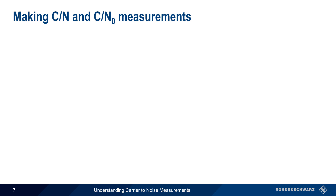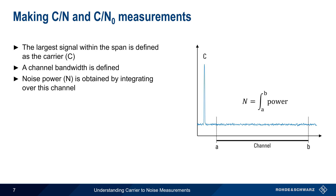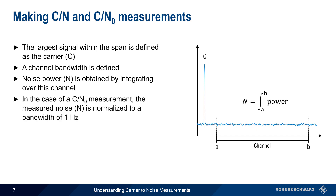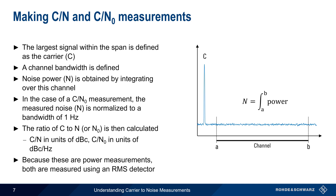When making a carrier-to-noise measurement, the largest signal within the spectrum analyzer span is defined as the carrier with power C. A channel bandwidth must also be defined, and the noise power N is then obtained by essentially integrating between the channel limits. In the case of a carrier-to-noise density measurement, the noise power measured within the channel is normalized to a 1 Hz bandwidth. The values of carrier power and noise or noise density power are then used to calculate the ratio. Carrier-to-noise is usually shown in units of dBc, and carrier-to-noise density in units of dBc per Hz. An RMS detector is used because these are power measurements.